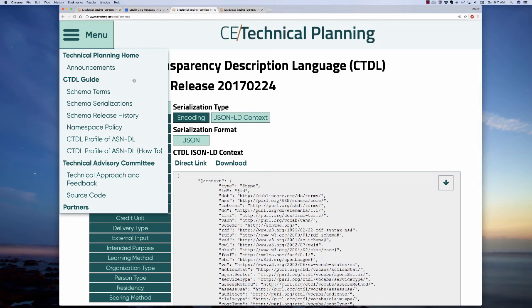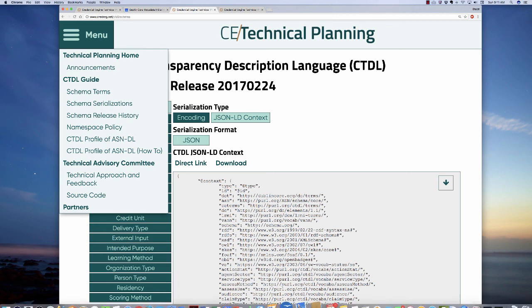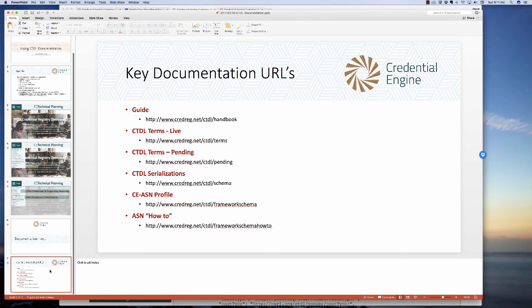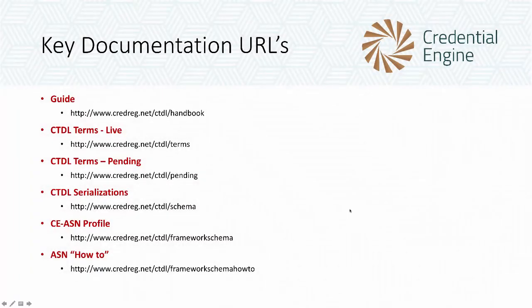That basically wraps up what I wanted to say. I'm sure I left out pieces and you may have questions — feel free to ask those questions on the available Google forums. Here is a key documentation URLs list, but bear in mind you don't have to remember this. Just go to the Credential Engine technical website and all of it is available to you in the drop-down menu in the upper left. Thank you very much for coming along for this tour. I hope you found it useful.